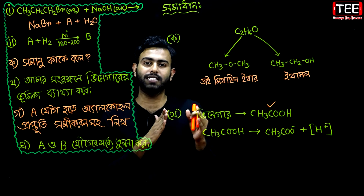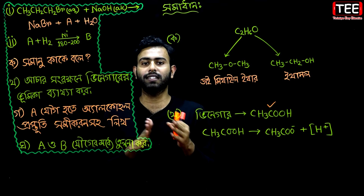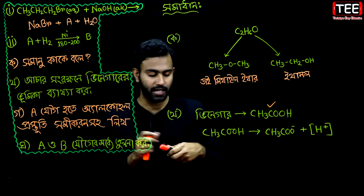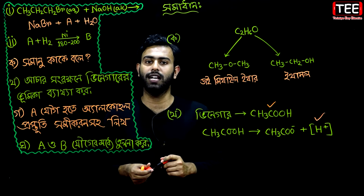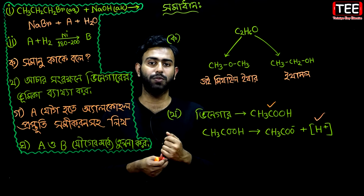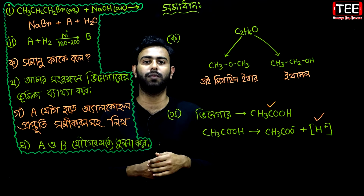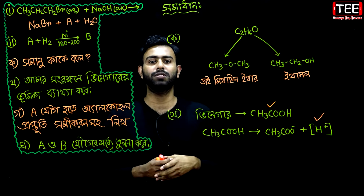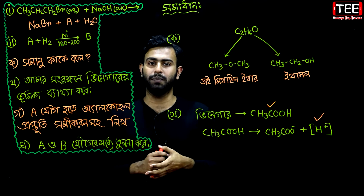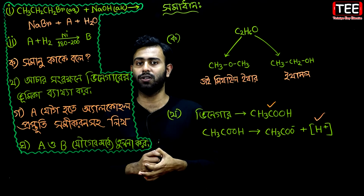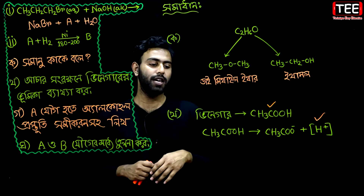We need to get the acid more than the bacteria. The protein is the protein, so we need to get the protein more than the bacteria. But bacteria don't have to do it because it's a matter of what happens in other cases.